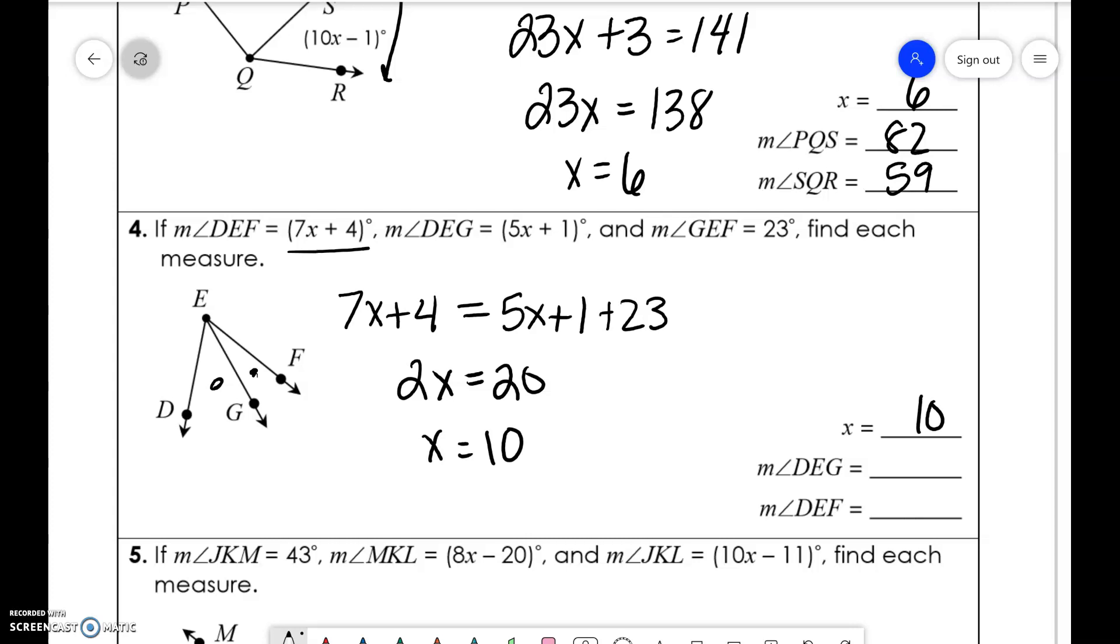So DEG, you're just plugging into DEG here. So 5 times 10 plus 1 is 51. And DEF, so 7 times 10 plus 4 is 74.